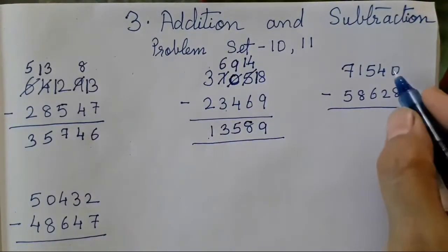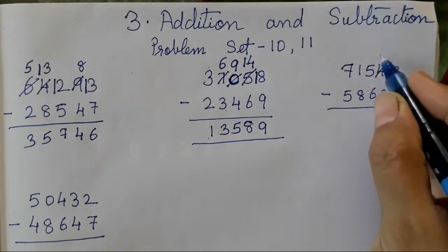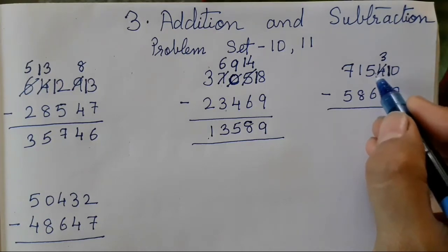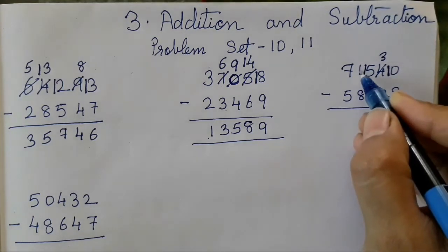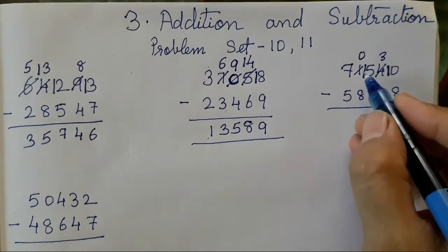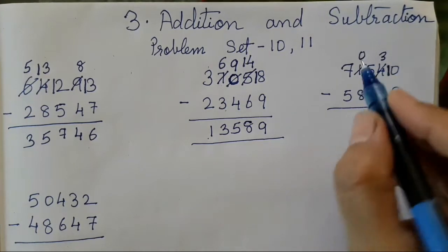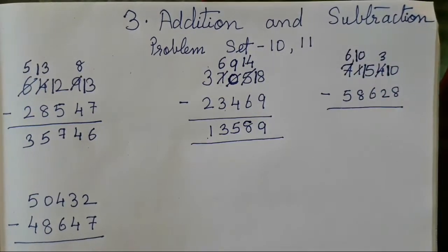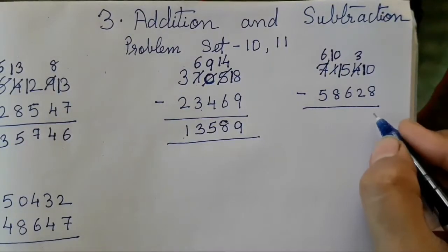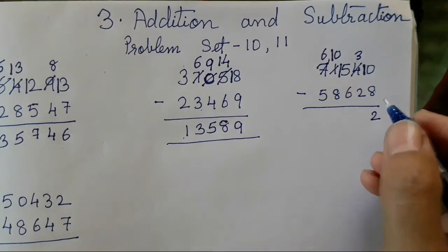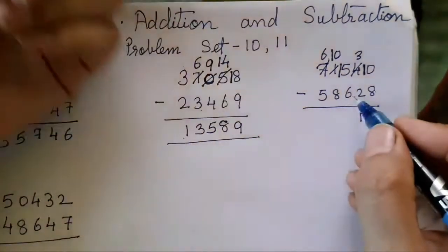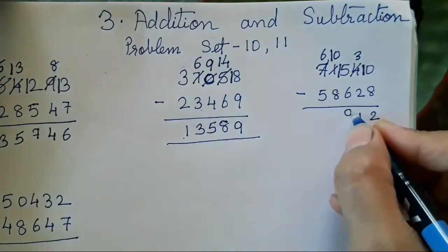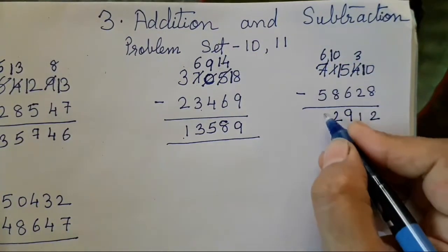Now let's move on to the next number. 0 minus 10 cannot be done, so 1 we have borrowed from 3. 3 minus 2 can be subtracted. 5 minus 8 cannot be subtracted, so this will be 15 — 1 we have borrowed from 0, and 1 we have borrowed from 1, so the answer is 0. Now 0 minus 8 cannot be done, so this will be 10 and 1 we have got from 7, so it will become 6. Count after 8 till 10 — 10 minus 8 is 2. 3 minus 2 is 1. Count after 6 till 15: 7, 8, 9, 10, 11, 12, 13, 14, 15 — the answer is 9. 10 minus 8 again is 2. 6 minus 5 is 1.